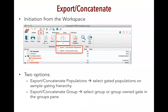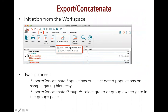Export and concatenate is the process of merging multiple files into a single file. It allows you to take several different samples or different tubes acquired on your cytometer and merge them together into a single new FCS-3 standard file. There are two basic options found under the file tab of your Flojo workspace, under the document band — export/concatenate populations or export/concatenate a group.